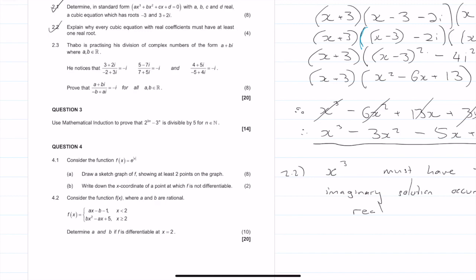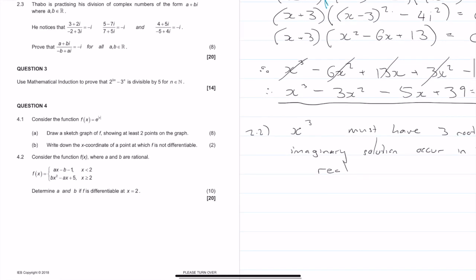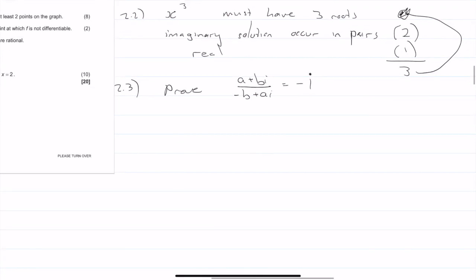Tabo is practicing his division of complex numbers of the form a plus bi, where a and b are real. He notices that basically all of these equal minus i. The actual question — question 2.3 — is a proof: prove that a plus bi divided by minus b plus ai is equal to minus i. So let's go ahead and do that. This is just a lot of algebra, really nothing much to it.